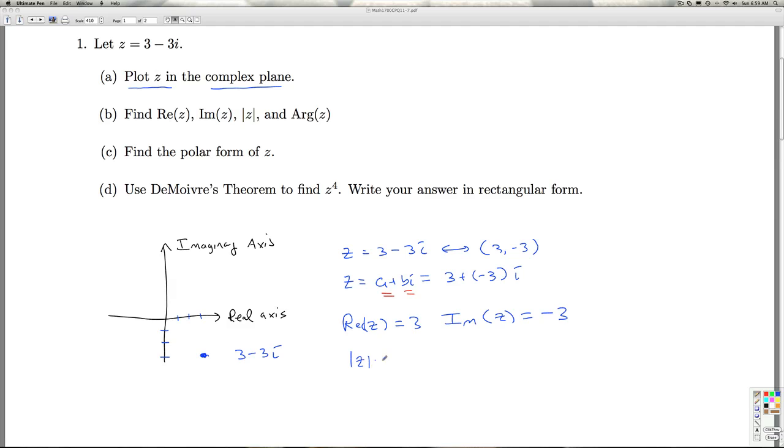To get the modulus of Z, we take the square root of the real part squared plus the imaginary part squared. Or, if we write it in the form a plus bi, it's a squared plus b squared. So here it's 3 squared plus negative 3 squared. That gives me 9 plus 9, that gives me 18. And the square root of 18 is 3 square root 2. So the modulus of Z is 3 square root 2.